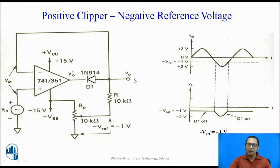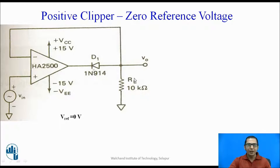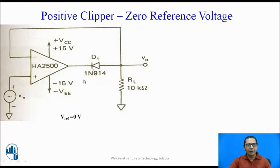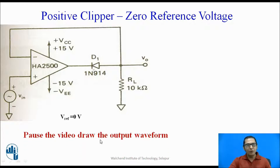Now let us look at an interesting circuit. In this case, the reference voltage is connected to zero. So this is a positive clipper with a zero reference voltage. Instead of a voltage divider, the reference voltage is directly connected to zero. You can pause the video and draw the output waveform for this circuit, which is a positive clipper with a special case: reference voltage equal to zero volts.